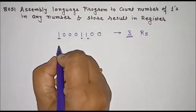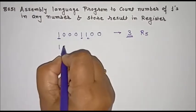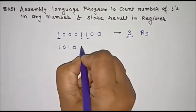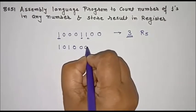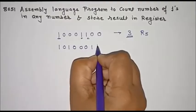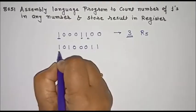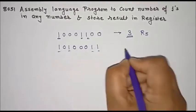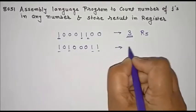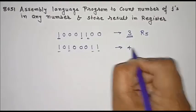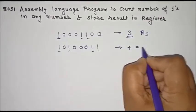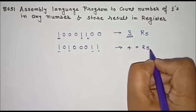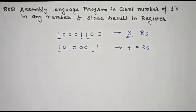We can take any number — suppose the number is like this. Then the number of ones in this number is four, so the result should be four and this result should be stored in register R5.